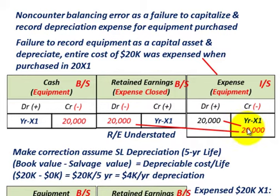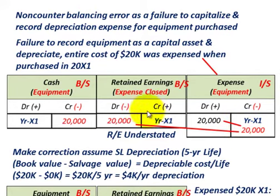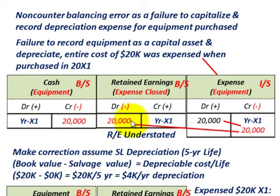At the end of the year, that entire $20,000 expense was credited out and moved into retained earnings on the balance sheet as a debit, reducing retained earnings by $20,000. So retained earnings would be understated by the amount of that purchase price that we expensed out, less any depreciation we would have recognized for the year.